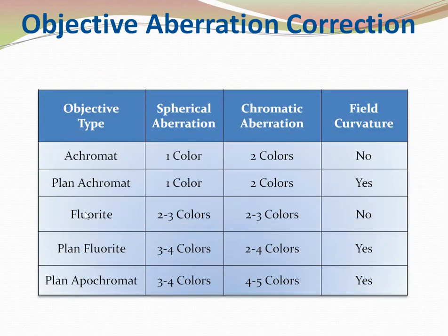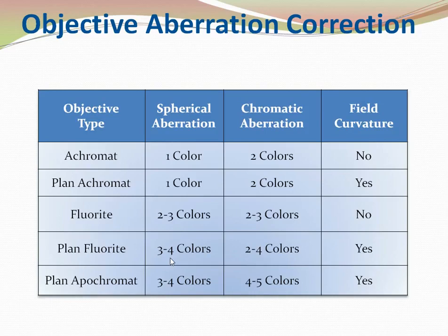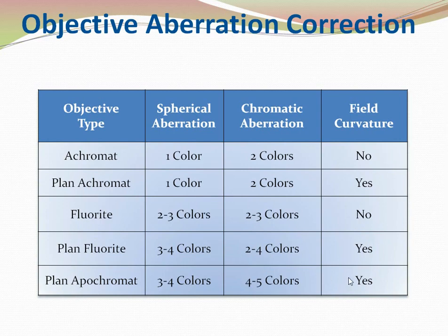These different types of objective lenses are corrected spherically and chromatically, and there is also field curvature correction. If it shows 'plane,' that means it is corrected for field curvature. Plane fluorite is corrected spherically for 3 to 4 colors and chromatically for 2 to 4 colors. The most commonly used objective is the plane apochromate, which is corrected spherically for 3 to 4 wavelengths, chromatically for 4 to 5 colors, and is also fully field-corrected.